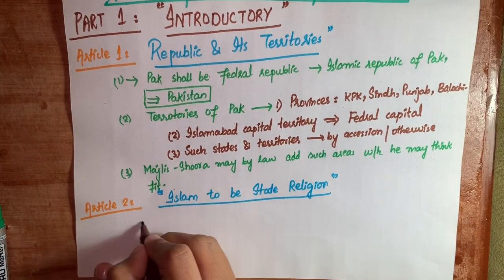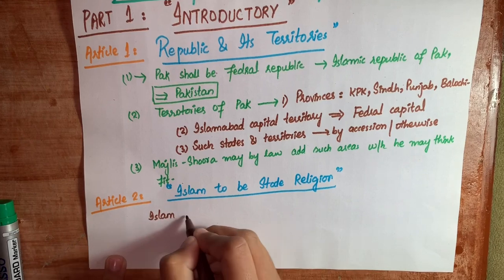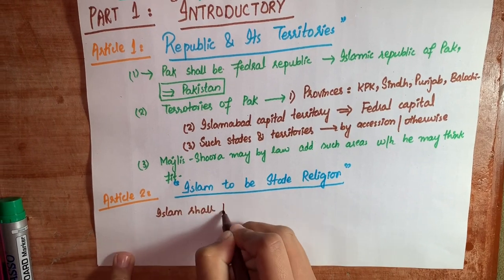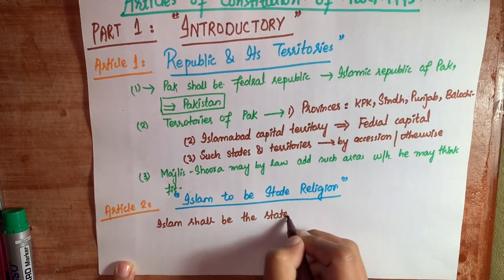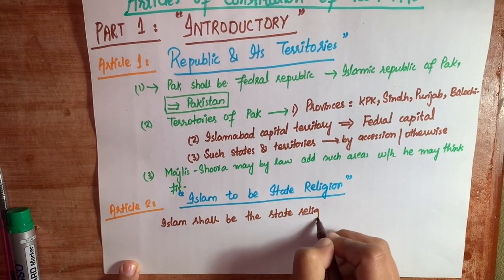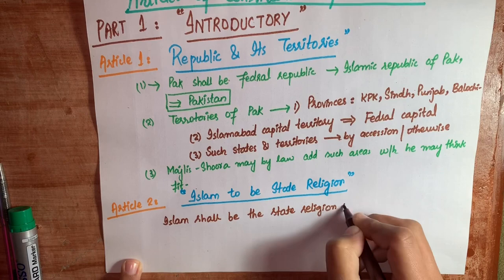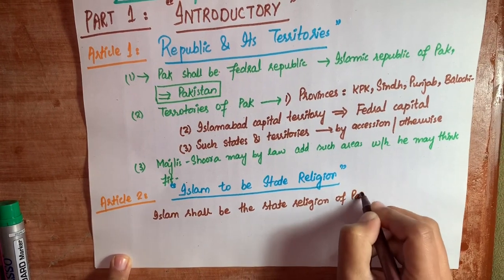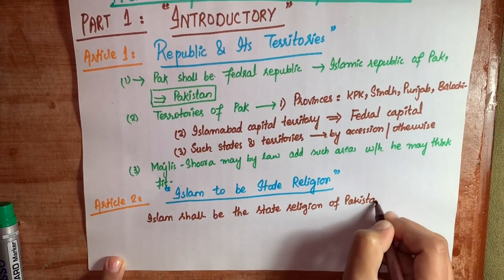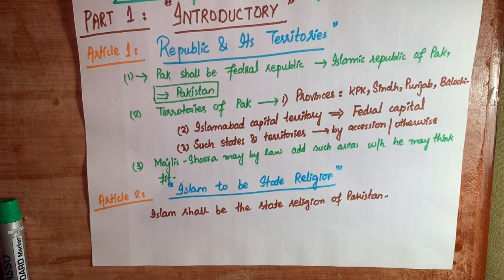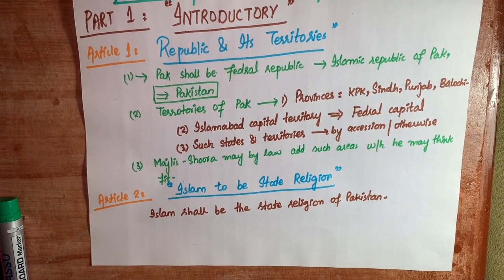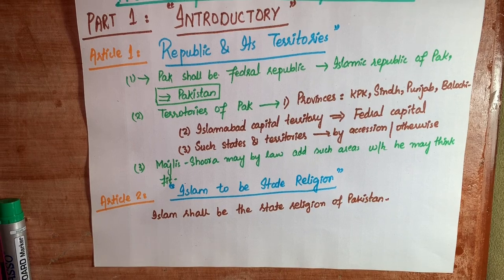Next is Article 2, which says Islam to be a state religion. Article 2 kehta hai keh Islam shall be the state religion of Pakistan — yani Islam jo hai woh Pakistan ki riyaasat ka mazhab hoga.